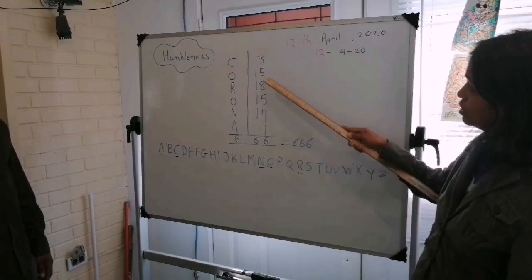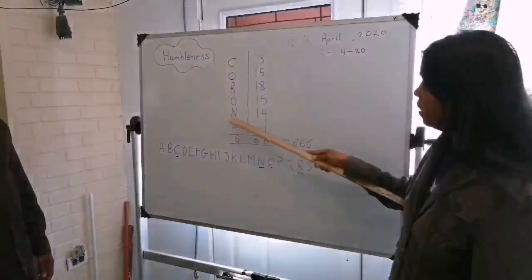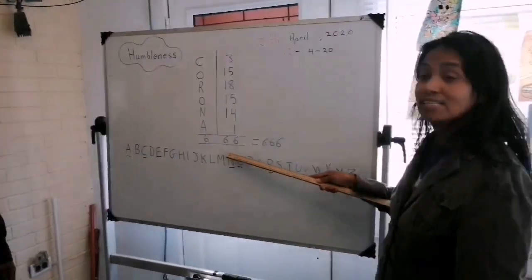Now, when you add up these six numbers, three, fifteen, eighteen, fifteen, fourteen, and one, you get sixty-six. And when you add up everything now, you get six, six, six.